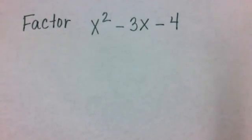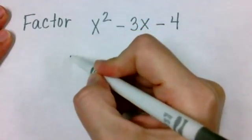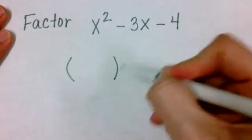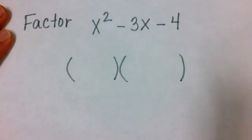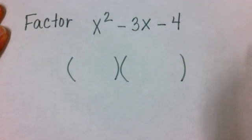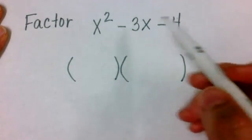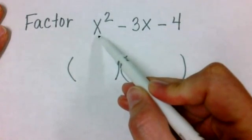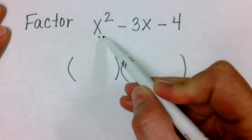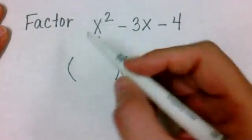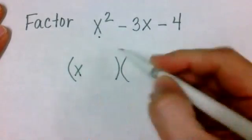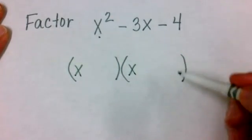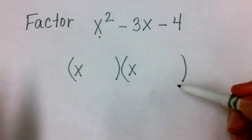To factor x squared minus 3x minus 4, we are looking for two parentheses that when we multiply them together, we get x squared minus 3x minus 4. Let's break this apart into two parts. The first part is we'll look at the first term. We'll ask ourselves, what times what will give me x squared? That would have to be x and x. Notice that I place these in the first positions in each of the parentheses.